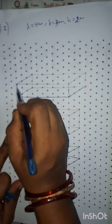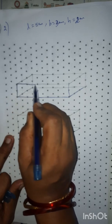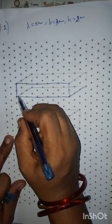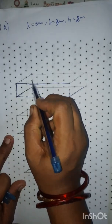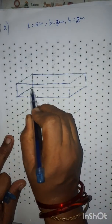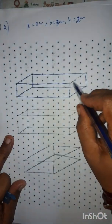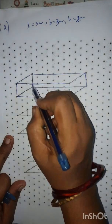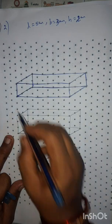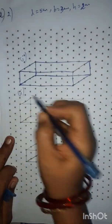Now we are going to draw the cuboid. This is the first type complete. Now see the second type.